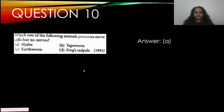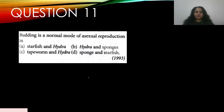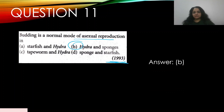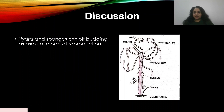Question number eleven: budding is a normal mode of asexual reproduction in — A) starfish and hydra, B) hydra and sponges, C) tapeworm and hydra, D) sponge and starfish. Budding is seen in hydra and sponges. The answer is B. In hydra, a bud forms as part of the body, grows, and then detaches from the parent to form a new hydra. Sponges also exhibit budding as asexual reproduction.